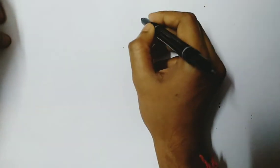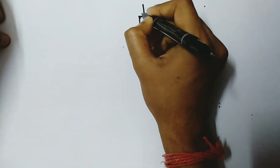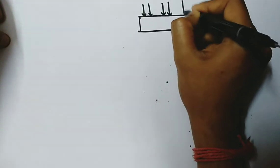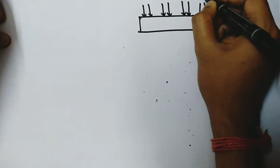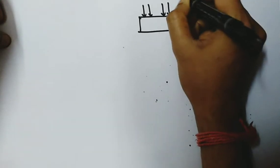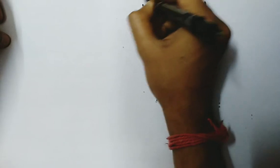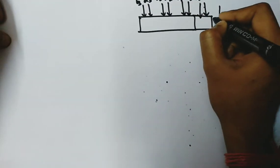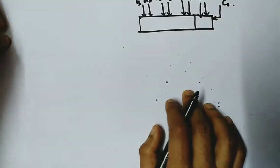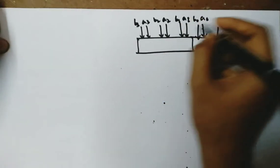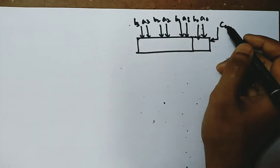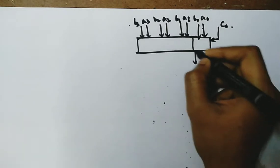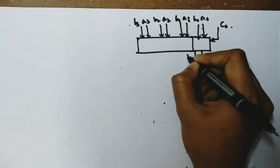So we can model this by a diagram like this. A3 B3 and input carry C0. So we know all this and also C0, so from this we can compute in the first stage we have to compute G0 P0.